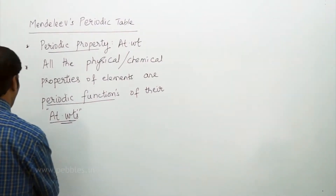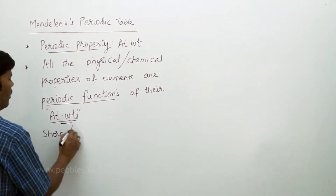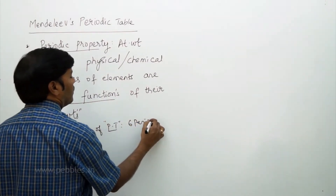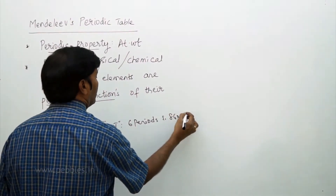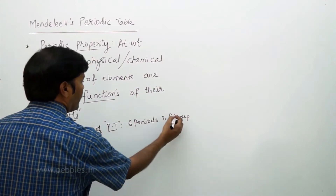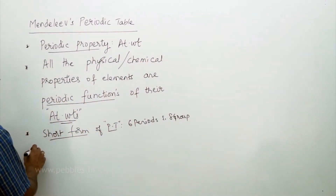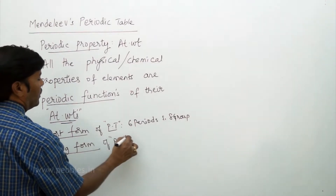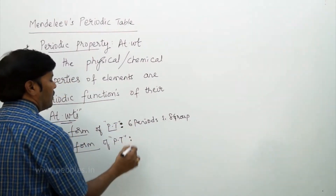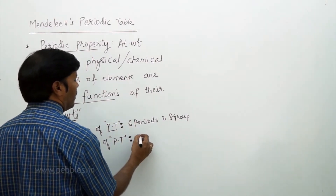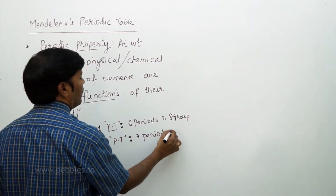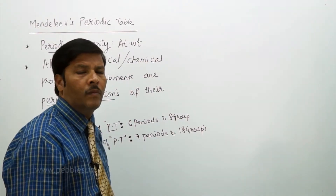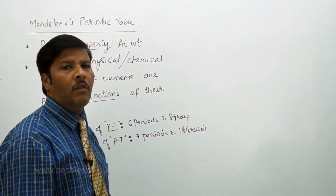The short form of the periodic table, PT, contains six periods and eight groups. The long form of the periodic table according to Mendeleev contains seven periods and eighteen groups. However, there are some limitations in the periodic table.